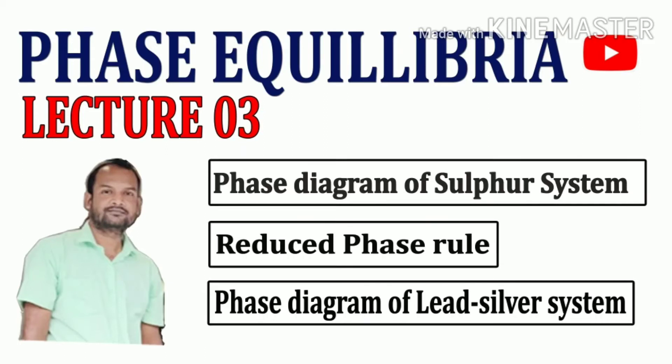Welcome to this class on phase equilibrium — this is the third lecture of this unit. In this lecture we are going to discuss three things: the phase diagram of the sulfur system, the reduced phase rule, and the phase diagram or equilibrium diagram of the lead-silver system.